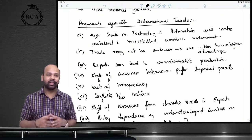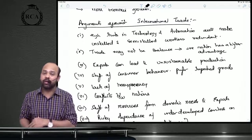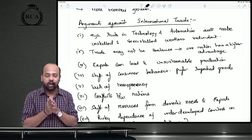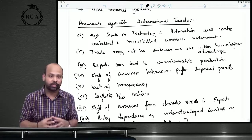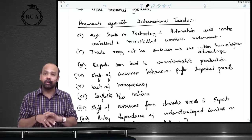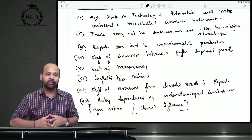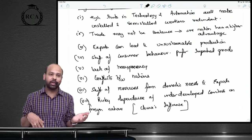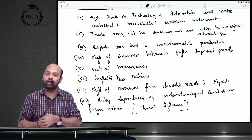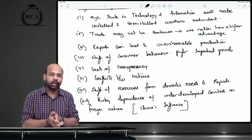There are also arguments against international trade. If you invest too much in technology and automation, employment opportunities will reduce — unskilled and semi-skilled jobs will disappear, and all employees should be made skilled, which may negatively affect countries with lower-skilled workforces. Trade may not be balanced between two countries; one nation would have an upper hand and the other a lower hand. Exports can lead to unsustainable production, exploiting all natural resources, which is not good in the long run.